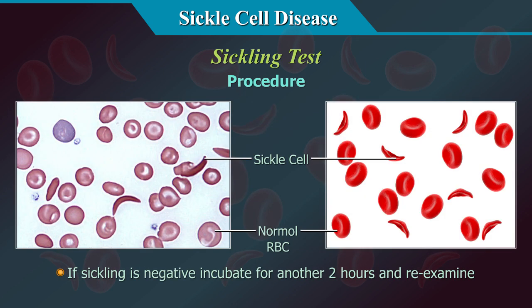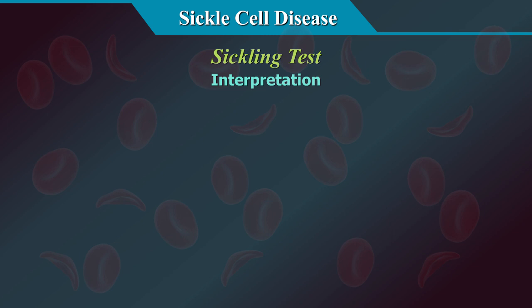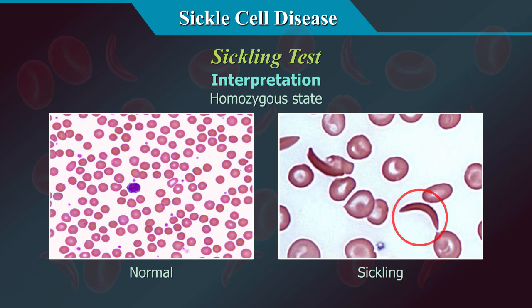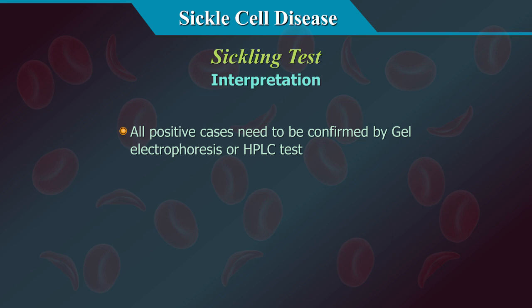If sickling is negative, incubate for another two hours and re-examine. If necessary, slides should be re-examined after 12 and 24 hours. In the homozygous state (sickle cell anemia), HbS causes complete sickling of red cells when deoxygenated by reducing substances. In the heterozygous state (sickle cell trait), this phenomenon is less marked and holly leaf forms are more prevalent than the sickled form. All positive cases need to be confirmed by gel electrophoresis or HPLC.